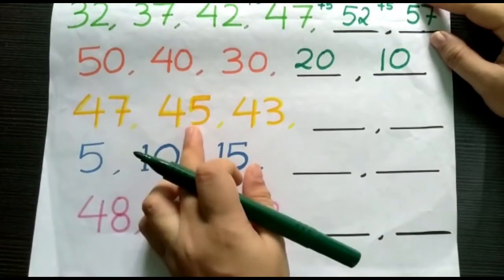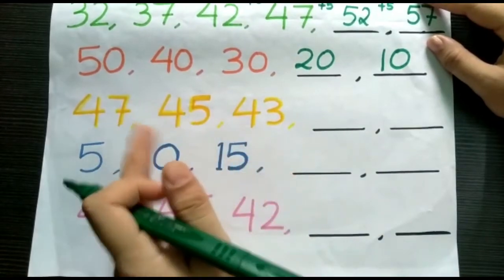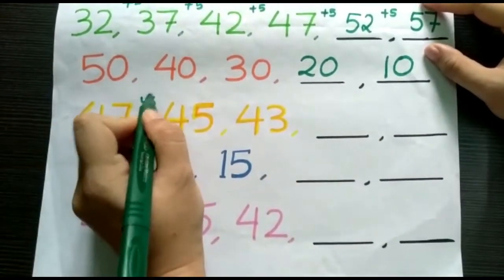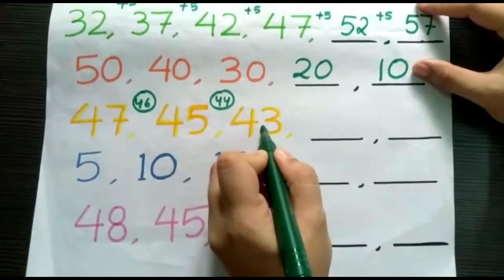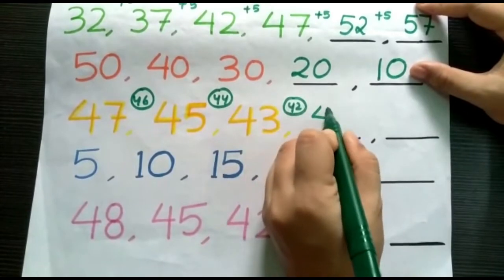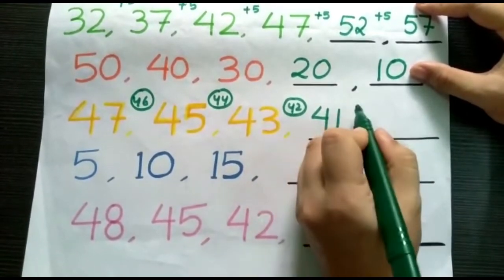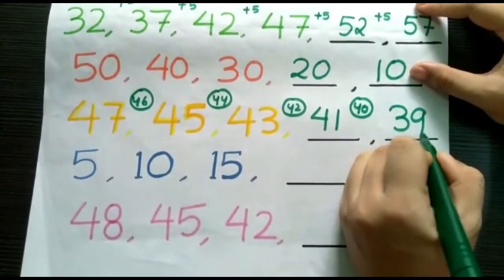47, 45, 43 is also following a decreasing order. 47, here number 46 is missing. 45, number 44 is missing. 43, here 42 is missing. Next number 41. And 40 will be missing number, followed by 39.